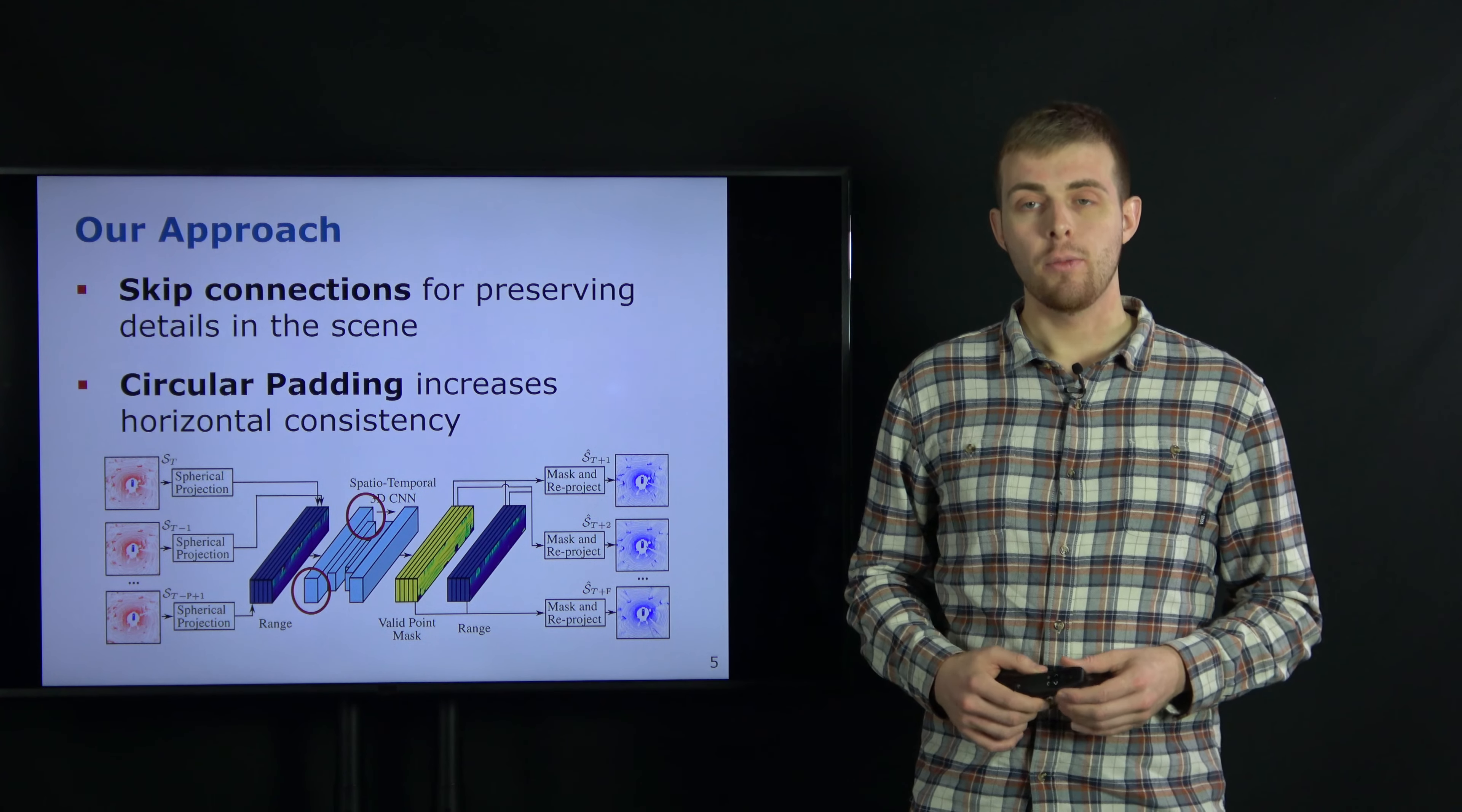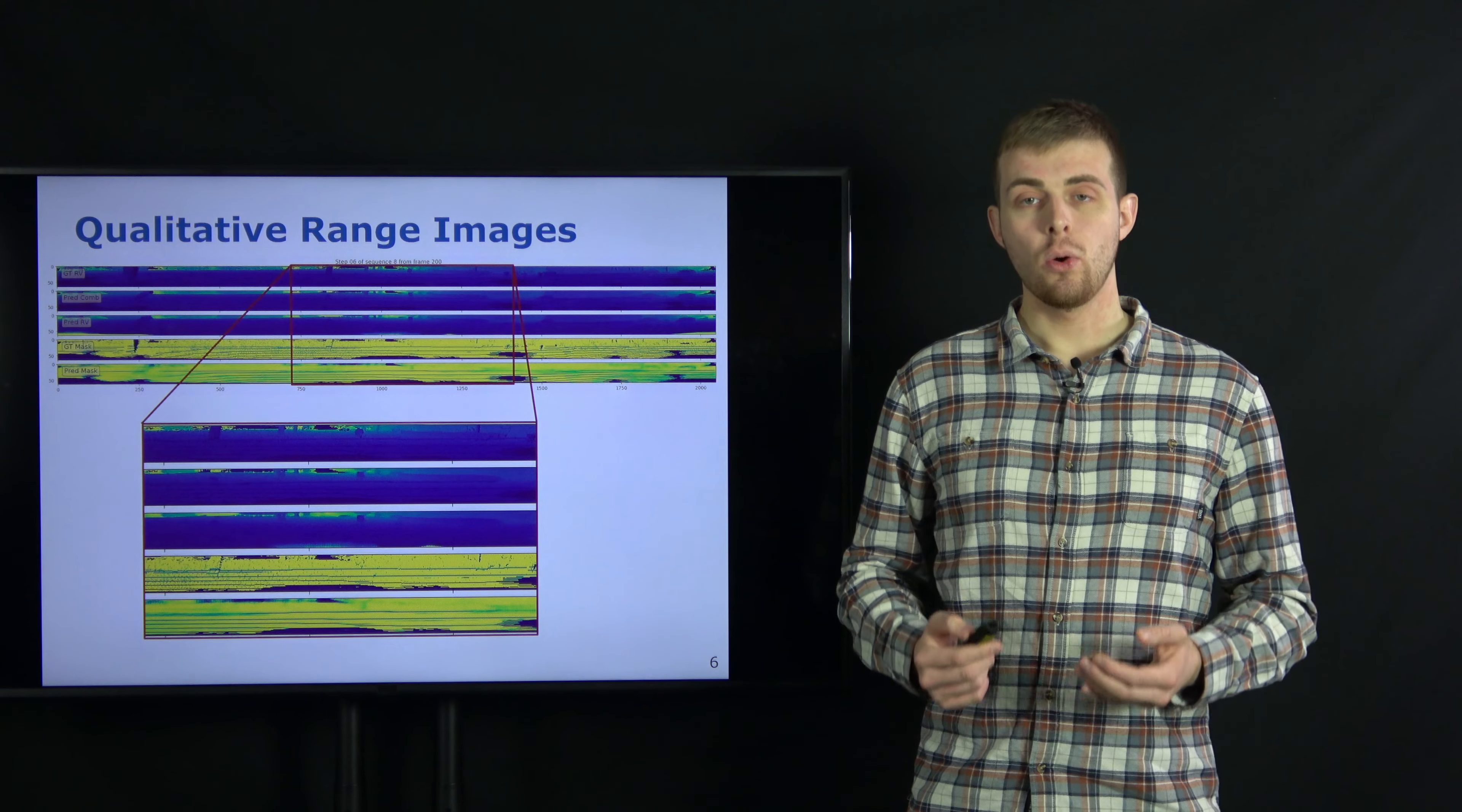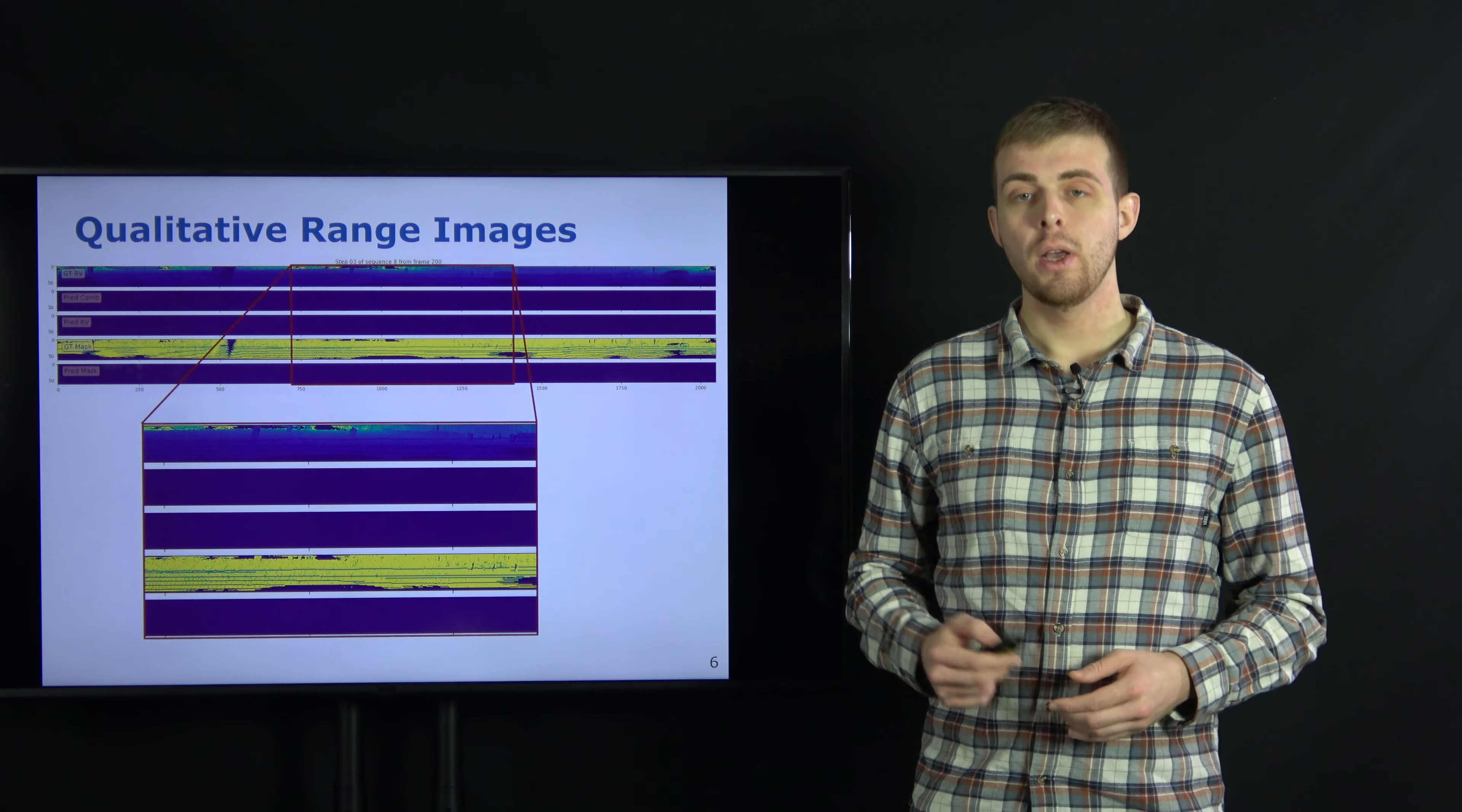We train our network with a fast-to-compute image-based L1 loss between the ground truth and predicted range images. The valid point classification is supervised with a binary cross entropy loss. After this, we fine-tune the model with an additional Chamfer distance loss.